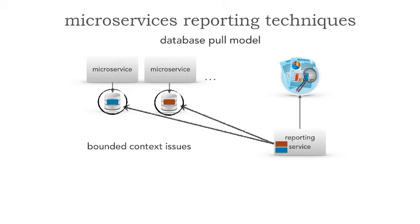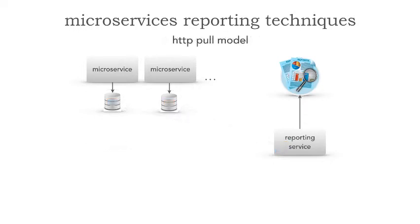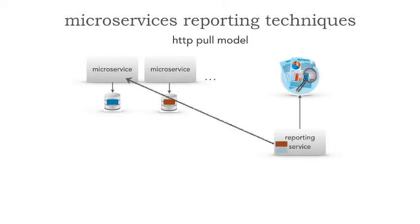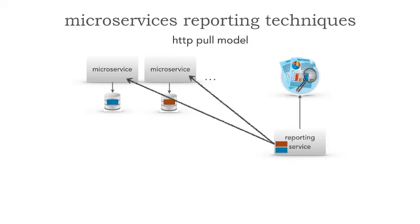To preserve the bounded context, what's really our only choice? We can ask for the data — and that's the HTTP pull model. In this case, the reporting service, instead of getting the data directly, asks each microservice for its data. So you can see that I'm making these HTTP or RESTful calls and getting the data. If we analyze this, we can see that we're actually preserving the bounded context, which is a good thing.